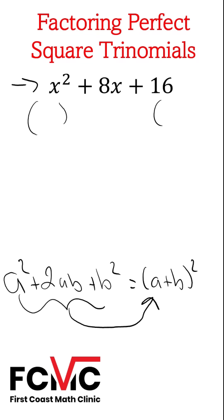And to do that, we're going to figure out, are the first and last terms perfect squares. So what can we square to get x squared? Well, we can square x, that's going to be our a squared. And what can we square to get 16? We can square 4, that's our b squared.